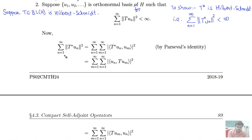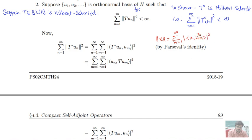We start with summation n equals 1 to infinity of the norm of T*(uₙ) squared. Now we apply Parseval's identity. Recall that Parseval's identity is the equality part of Bessel's inequality: the norm of x squared equals summation m equals 1 to infinity of the mod of the inner product x with uₘ squared, for a given orthonormal basis.